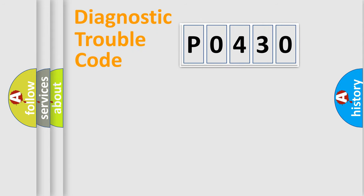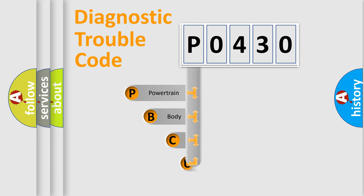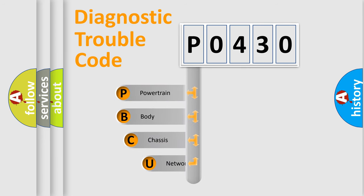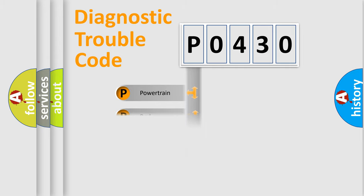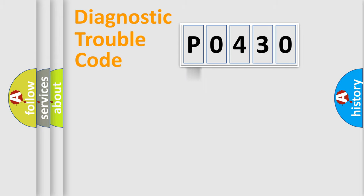Let's do this. First, let's look at the history of diagnostic fault code composition according to the OBD-II protocol, which is unified for all automakers since 2000. We divide the electric system of automobile into four basic units: Powertrain, Body, Chassis, and Network.